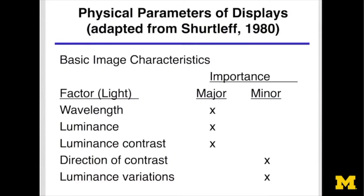Here's a list of parameters of displays. The question is, what really matters a lot and what don't we care about? Wavelength — and by that I'm really referring to color — matters a lot. The luminance of the display and the luminance contrast also matter. But the direction of contrast, whether it's black on white or white on black, doesn't matter very much, with a few exceptions.